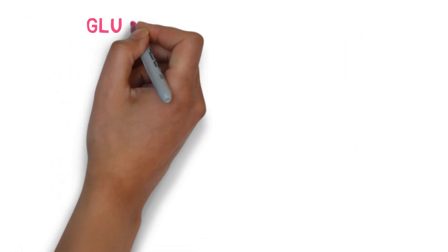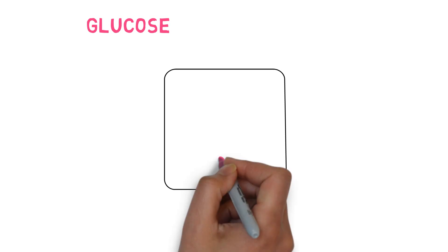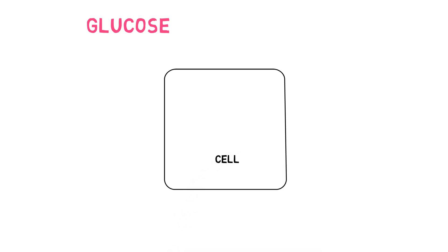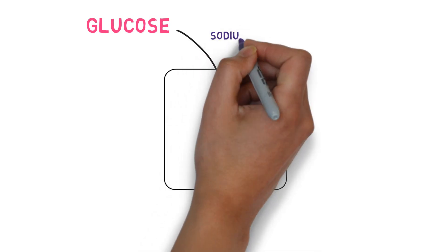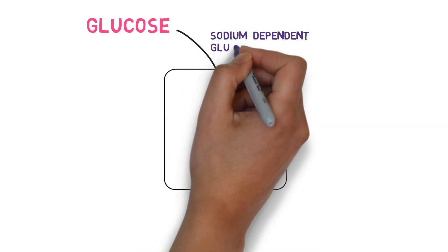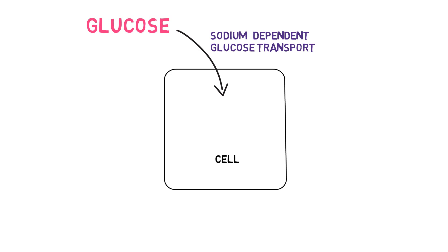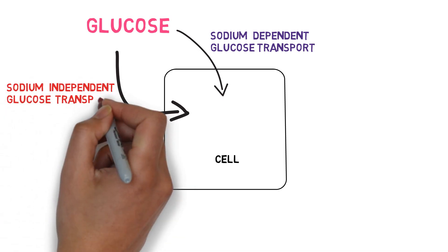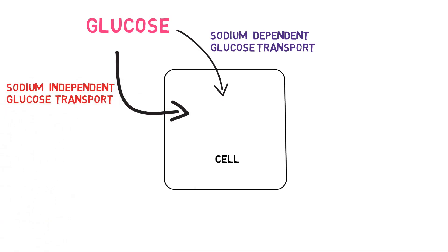The next question is how a glucose molecule enters into a cell. There are two main transport mechanisms: the sodium-dependent glucose transport system and the sodium-independent glucose transport system.